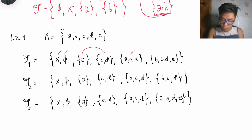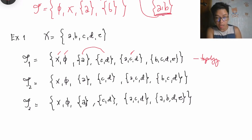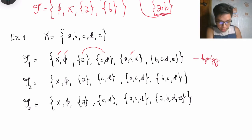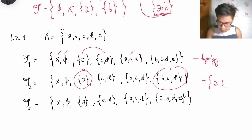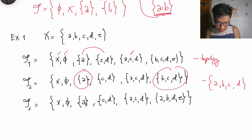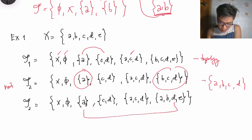For tau sub 2, let's find a condition that is not satisfied. If I take the union of certain elements in tau sub 2, I get {a,b,c,d}, and that set is not found in tau sub 2. Therefore, tau sub 2 is not a topology.